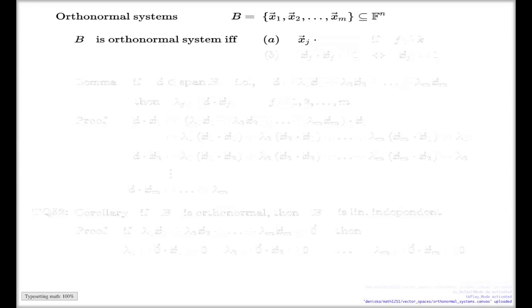First one is this: if you take the dot product of any pair of vectors from this system, it will be zero as long as the pair is distinct, so the vectors do not coincide.